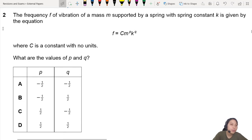Question 2 is a units question from chapter 1. The frequency of vibration of a mass m supported by a spring with spring constant k is given by this equation, where c is a constant with no units. What are the values of p and q?